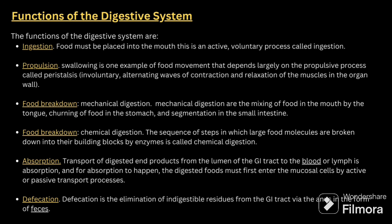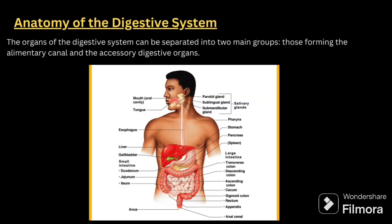The main functions of the digestive system are ingestion, propulsion, food breakdown, food absorption, and defecation. Ingestion is a voluntary process — whatever food we take into the mouth, like mastication and chewing. Propulsion means swallowing of the food. Food breakdown involves mechanical digestion — mixing of food in the mouth by tongue, churning food in the stomach, and segmentation in the small intestine — as well as chemical digestion, where large food molecules are broken down into smaller molecules.